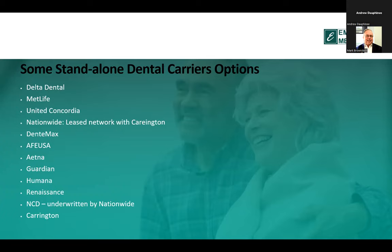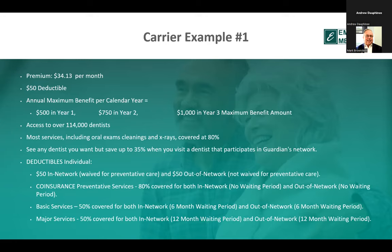There are a number of standalone dental carrier options — it's a long list and I've helped people with all of them. They all have different plans and vary by state. Here's one example: premium $34 a month, $50 deductible. The first year you get $500 of coverage, the second year $750, the third year $1,000. It includes access to 114,000 dentists, and most services including oral exams, cleanings, and X-rays are covered at 80%.